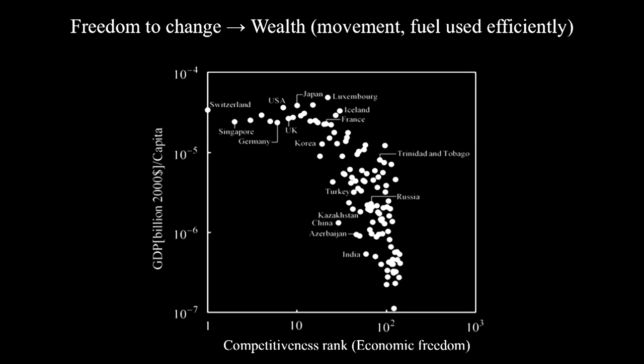Here is an additional representation of the same phenomenon of hierarchical movement on the planet. In the vertical direction we have wealth; in the horizontal direction, economic freedom — the ranking according to economic freedom, with freedom increasing to the left. Here we see the cloud is even thinner, and the movement upward means an evolution of the design toward greater freedom, both in history and in the future.